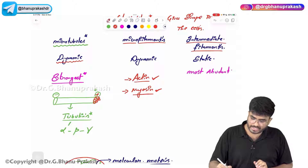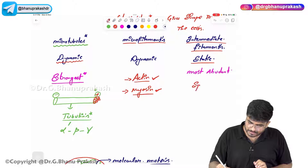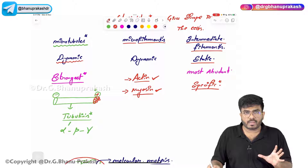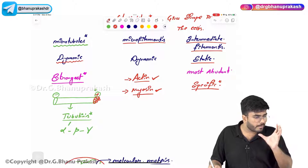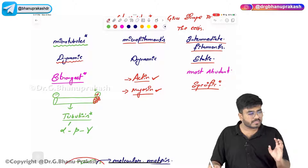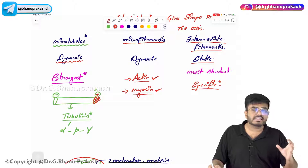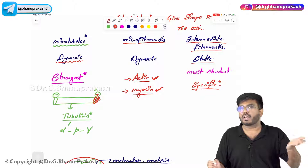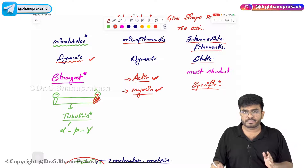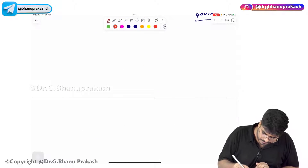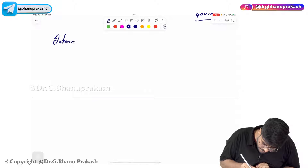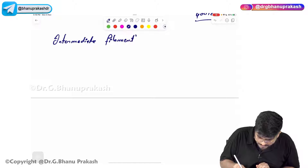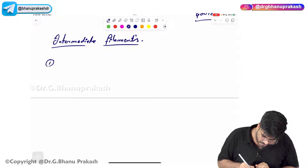Intermediate filaments are specific to particular types of cells, unlike microfilaments and microtubules which are present in all cells. For example, keratin is an intermediate filament present only in epithelial cells, and Glial Fibrillary Acidic Protein is present only in a particular type of cell.